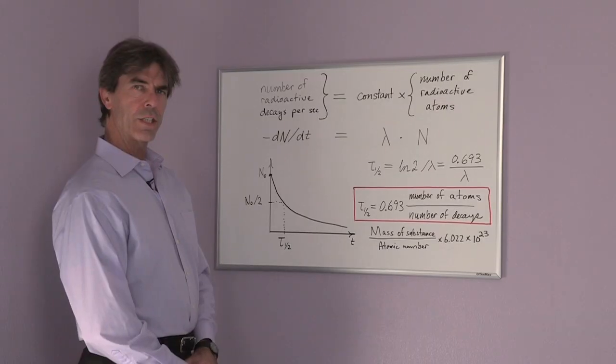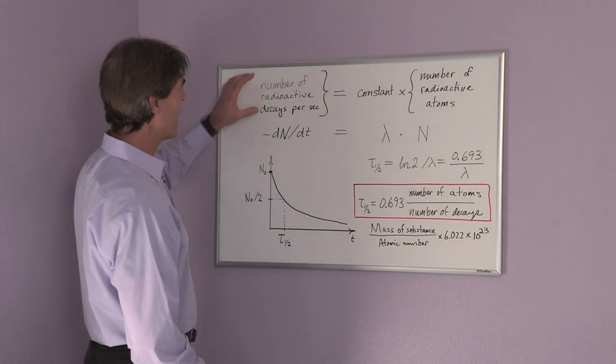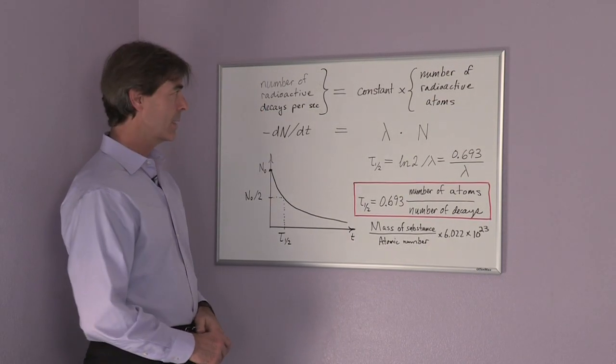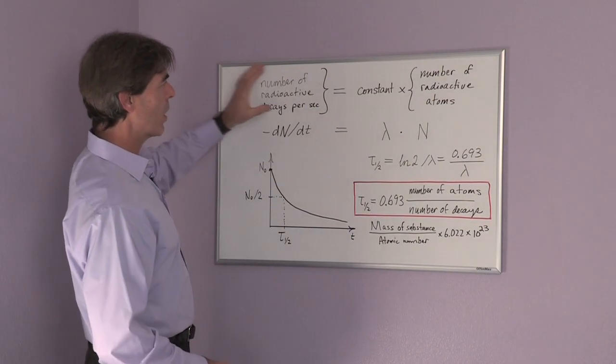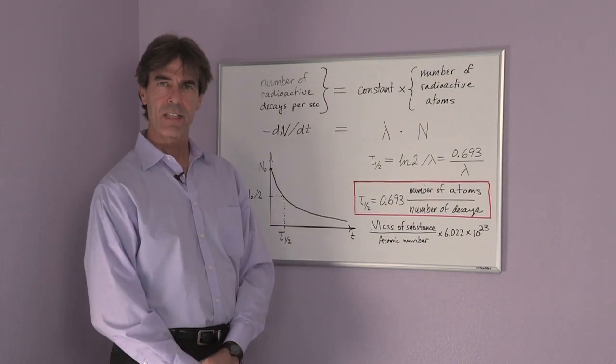Hello, my name is Harold Yorke. I'm a research scientist in Pasadena, California, and I'll be talking about the equation for determining the half-life of an isotope. To determine the half-life, we first need to measure the number of radioactive decays per second and know the number of radioactive atoms we have at the very beginning.